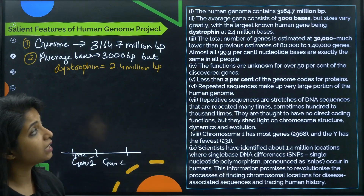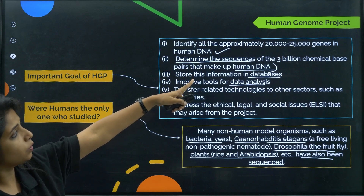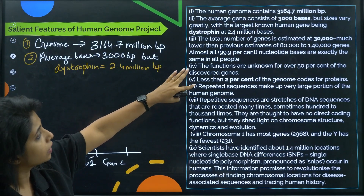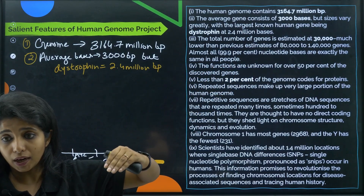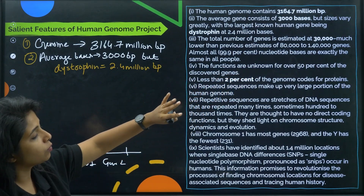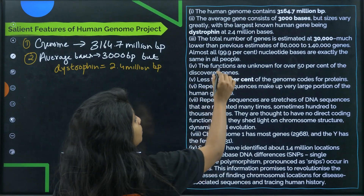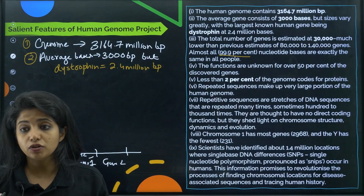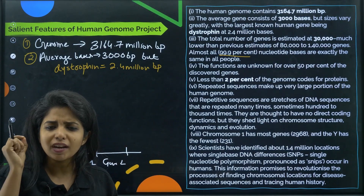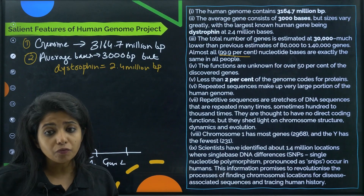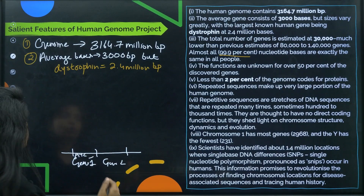Almost all nucleotide base pairs — 99.9% — are exactly the same in all people. That 0.1% difference is what makes us very different from each other. It is remarkable that such a small fraction of difference results in such variation among humans.